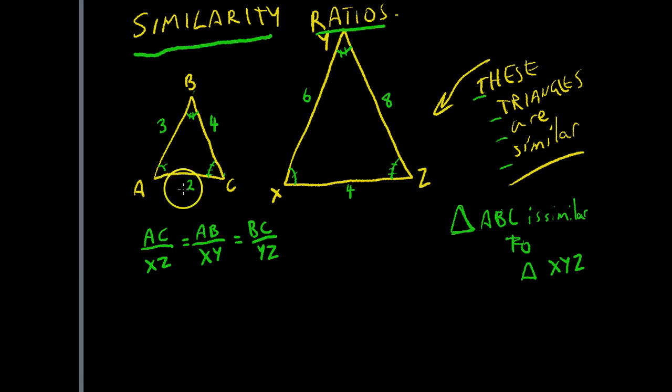That means that line AC is two, line XZ is four, and that's going to be equal to line AB, which is three, over XY, which is six, which is going to be equal to line BC, which is four, over eight. Oops, over eight.